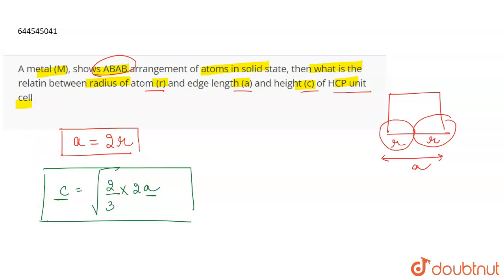So we can say that the relationship between the radius of the atom and the edge length is A equals 2R. And the relationship between the height and the edge length is this, and now you can convert this 2A in terms of radius also. So this will become under root 2 by 3 into 2A, which will be 4R.